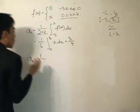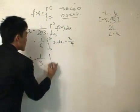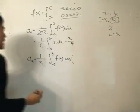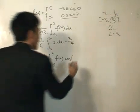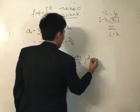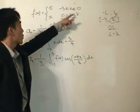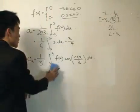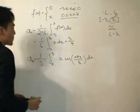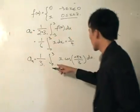Now for aₙ: it's 1 divided by L, where L is 3, because it's defined from minus L to L. Then I integrate from -3 to 3 of f(x) · cos(nπx/L) dx, with L = 3. Again, from -3 to 0 the function equals 0, so I can just integrate from 0 to 3, giving the integrand as x · cos(nπx/3).